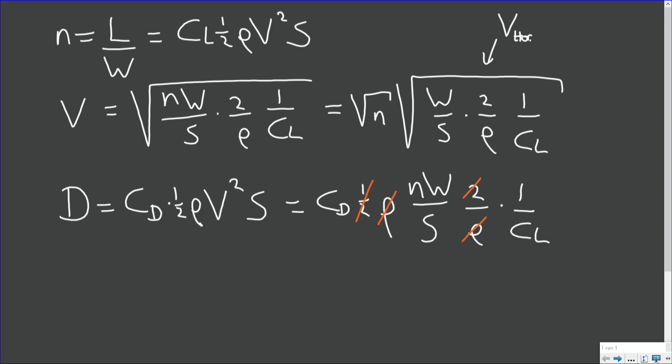And these terms of air density nicely cancel out. We have a half here and a 2. And of course I forgot to write down the S over here, so the S cancels out as well. And what we end up with is the following: we see drag is CD over CL times the load factor times the weight.